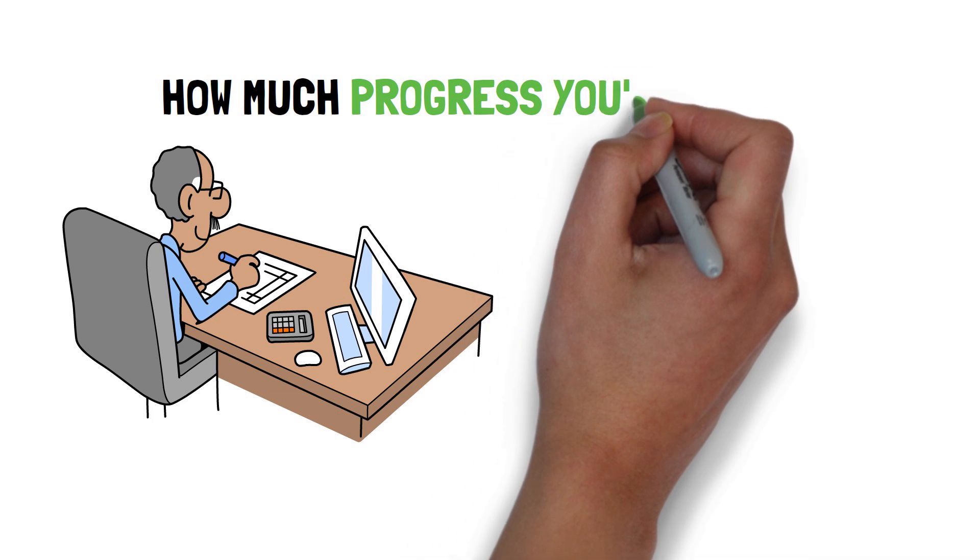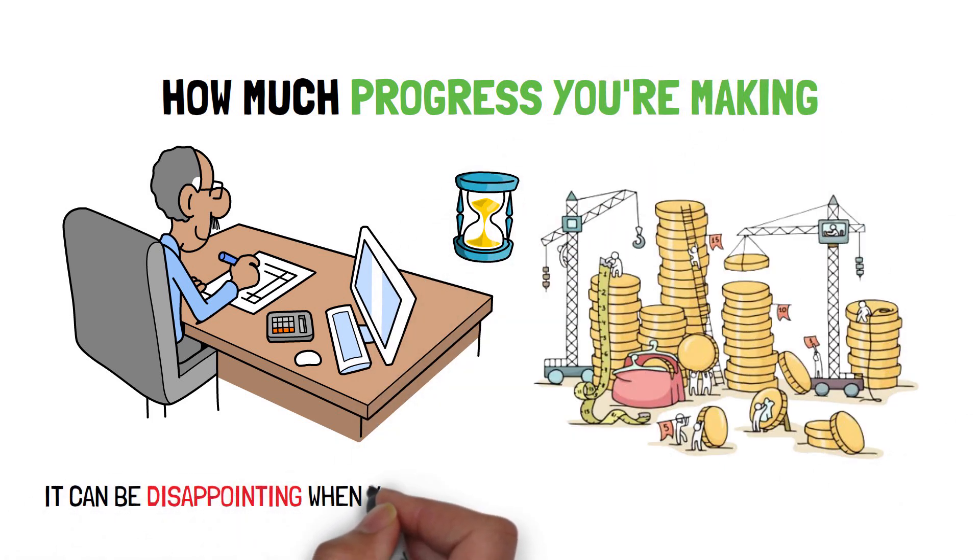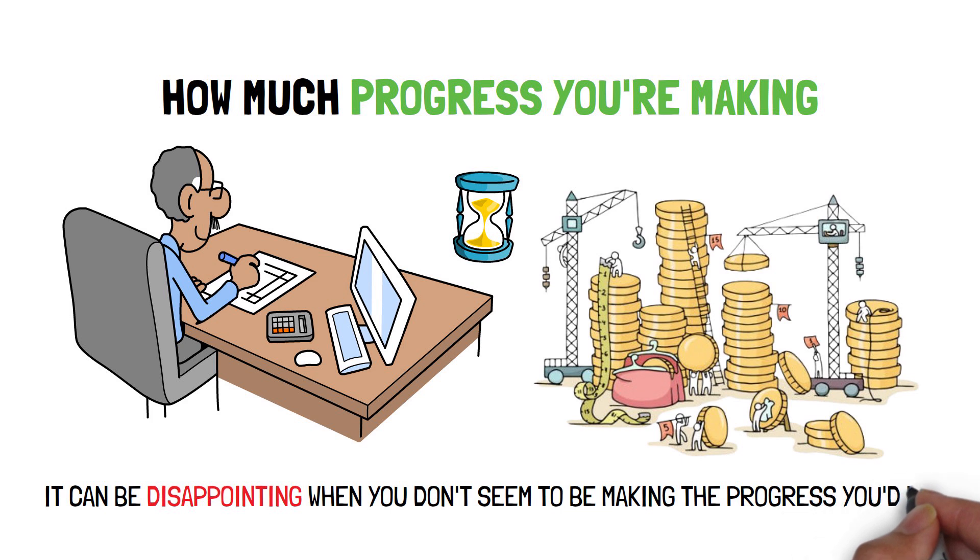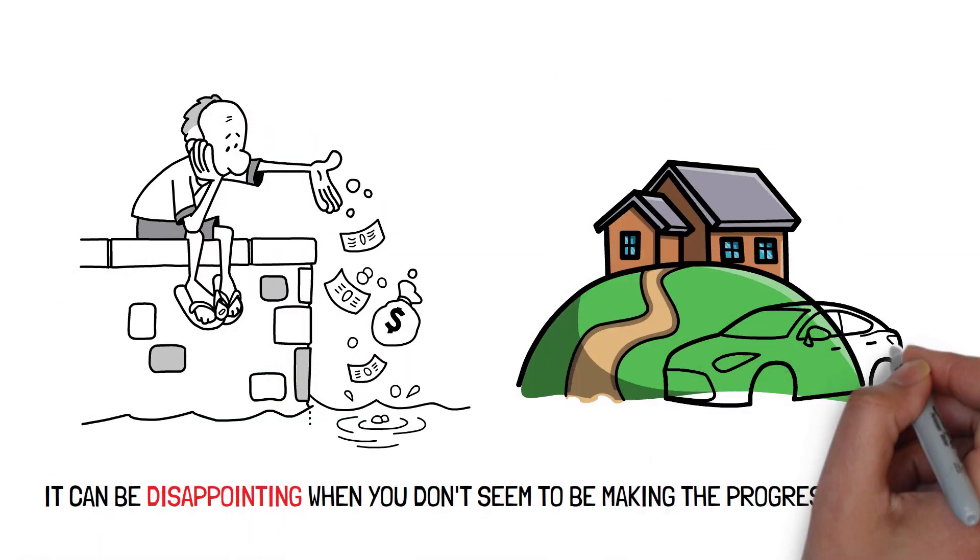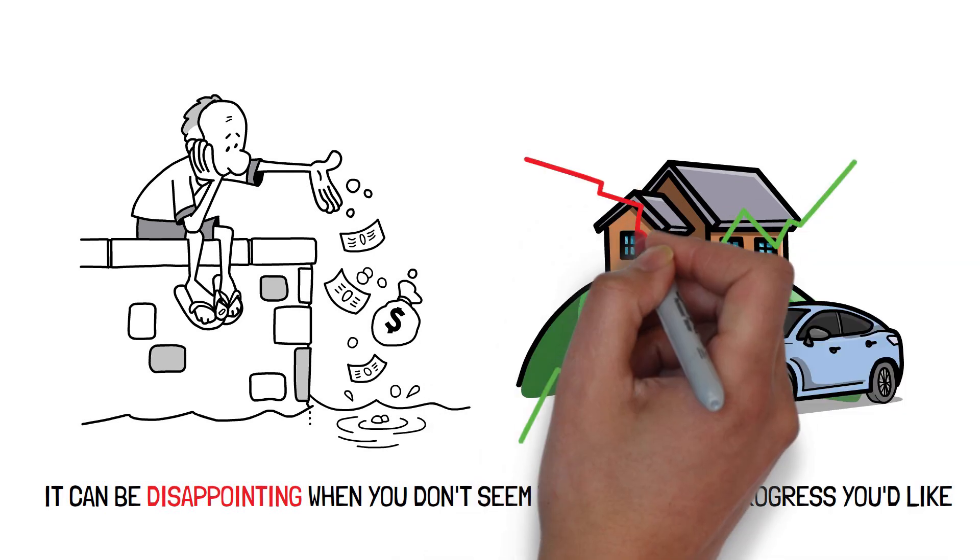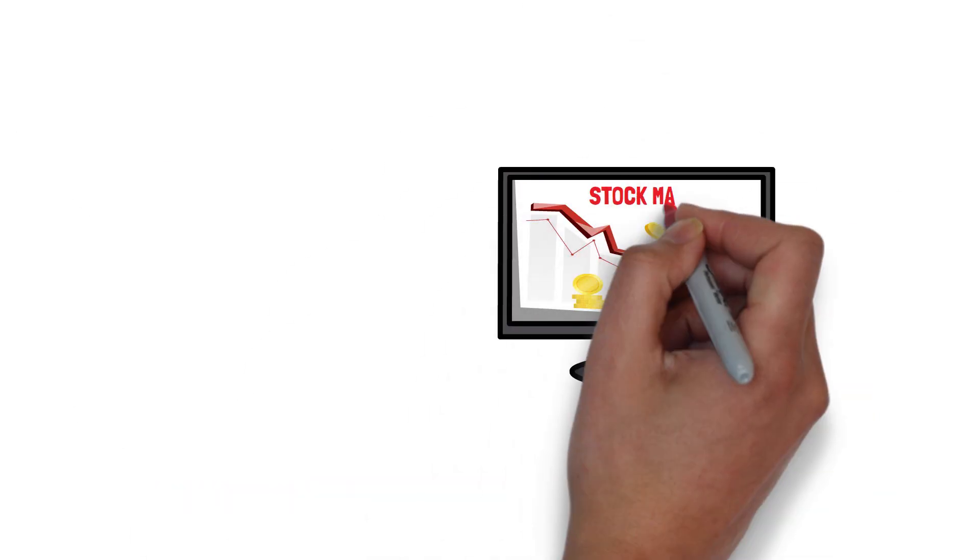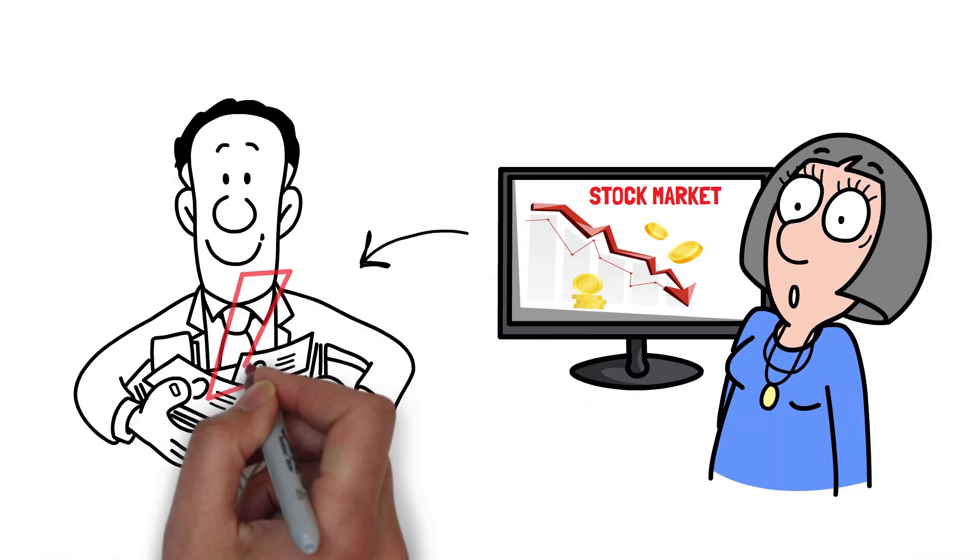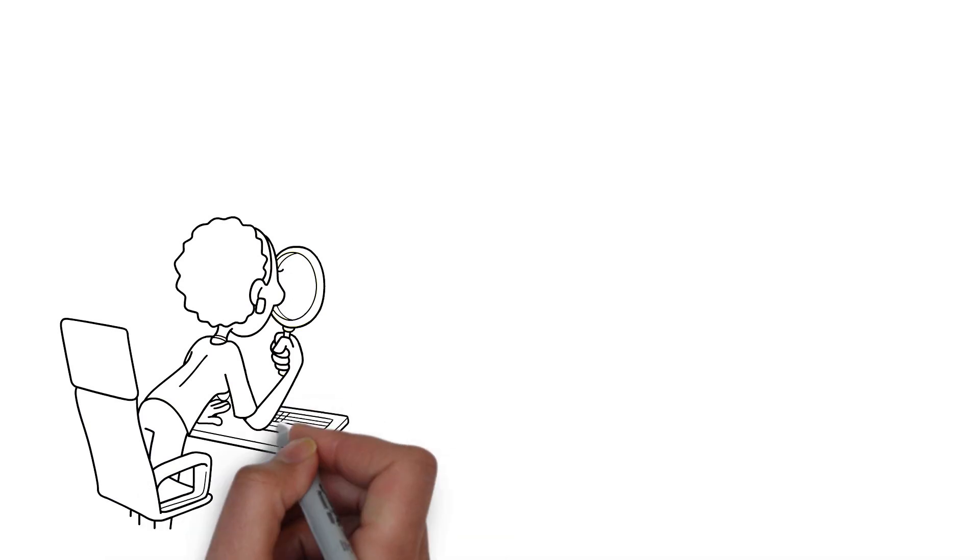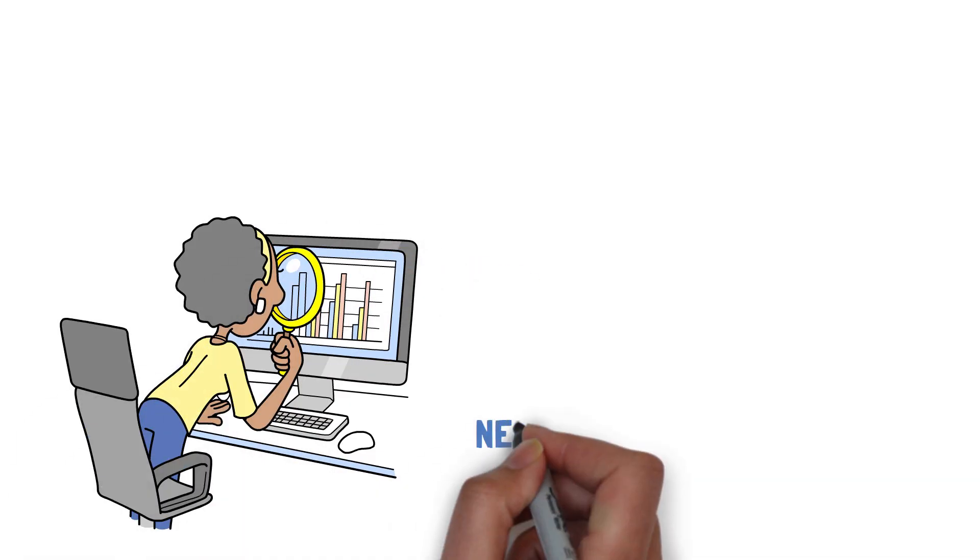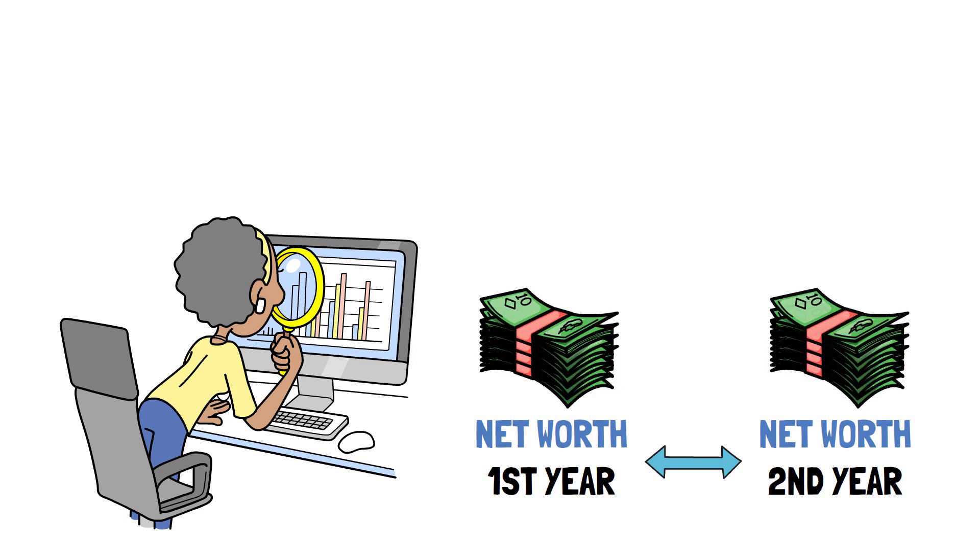This will show you how much progress you're making. Building wealth takes time, and it can be disappointing when you don't seem to be making the progress you'd like. It can feel like nothing is improving from one week to the next, especially if the value of your assets fluctuates. If the stock market performs poorly for a few months, it can be incredibly discouraging because your net worth may actually decrease. It's a good idea to keep an eye on the big picture and the changes over time. When you compare your net worth from one year to the next, odds are you'll observe progress.